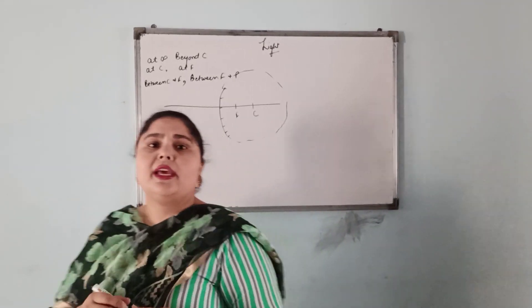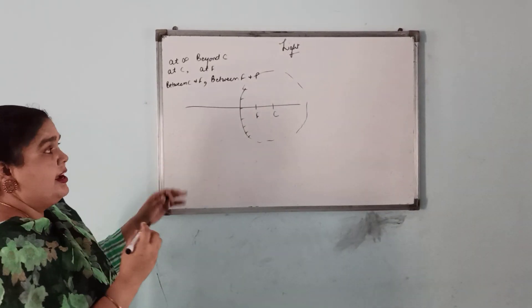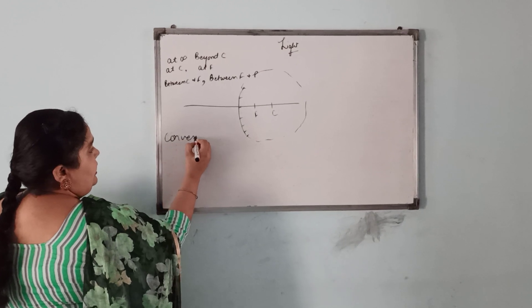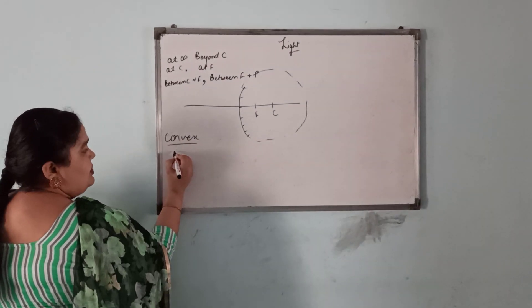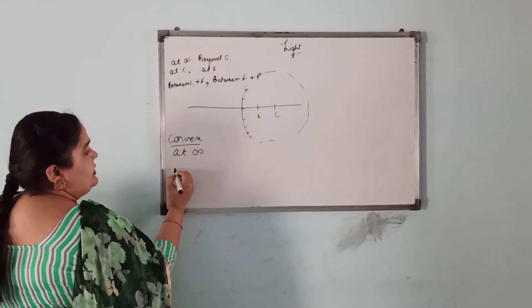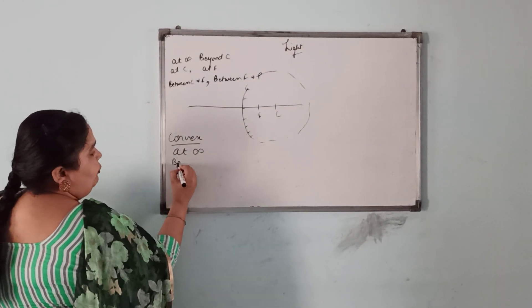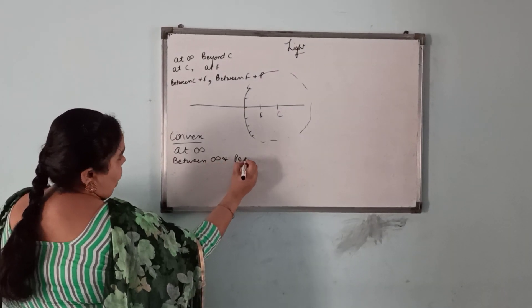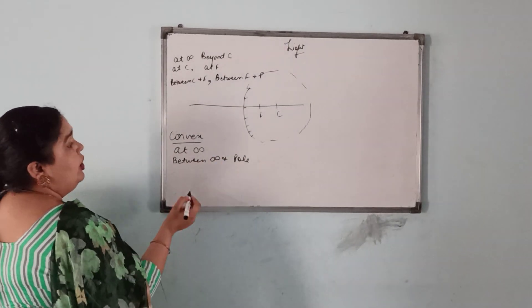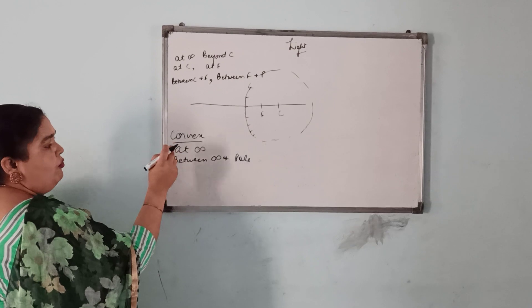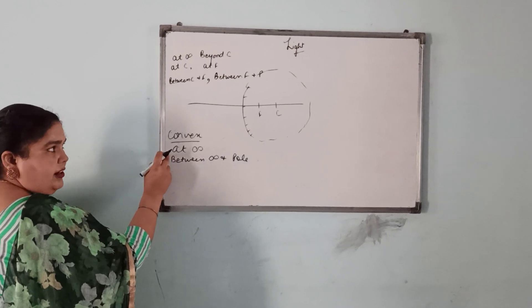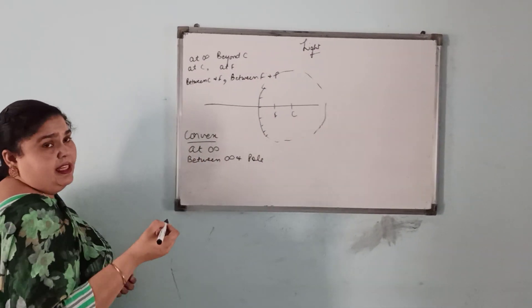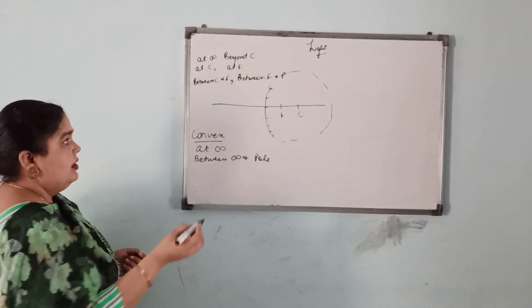We have two cases for the convex mirror ray diagram. The first case is when the object is at infinity, and the second case is when the object is between infinity and the pole. I am going to start with the first case — object at infinity. As the object is at infinity, we cannot see the object.